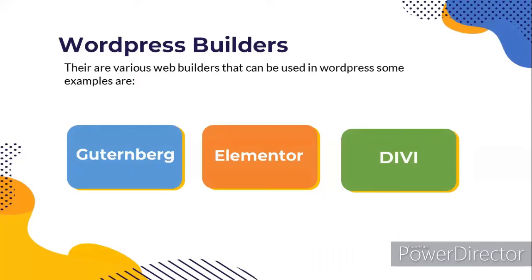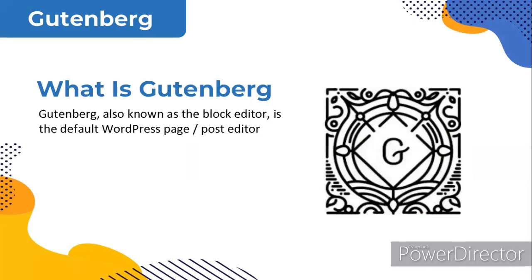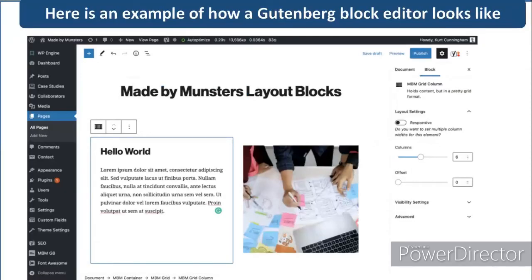Let's look at WordPress builders. There are various web builders that can be used in WordPress: Gutenberg, Elementor, and Divi. What is Gutenberg? Gutenberg, also known as the block editor, is the default WordPress page and post editor. It was introduced in 2018 with WordPress version 5.0. The WordPress team developed it in response to the community's need for a more advanced and intuitive default editor, replacing the former Classic Editor. Here is an example of how the Gutenberg block editor looks like.